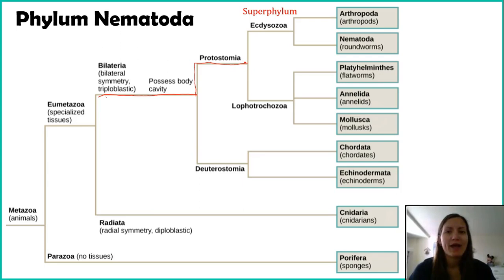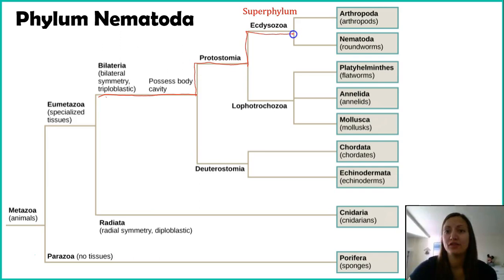From here we have another split between ectisozoa and lophotrochozoa. We'll talk about both as we cover each group, but we're going to start with superphylum ectisozoa, and specifically we're going to talk about our nematodes first.